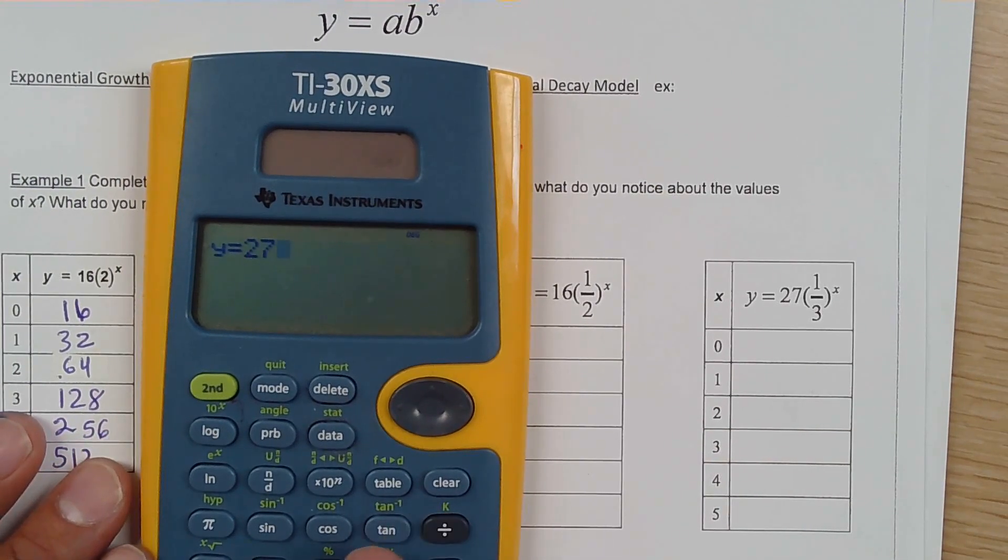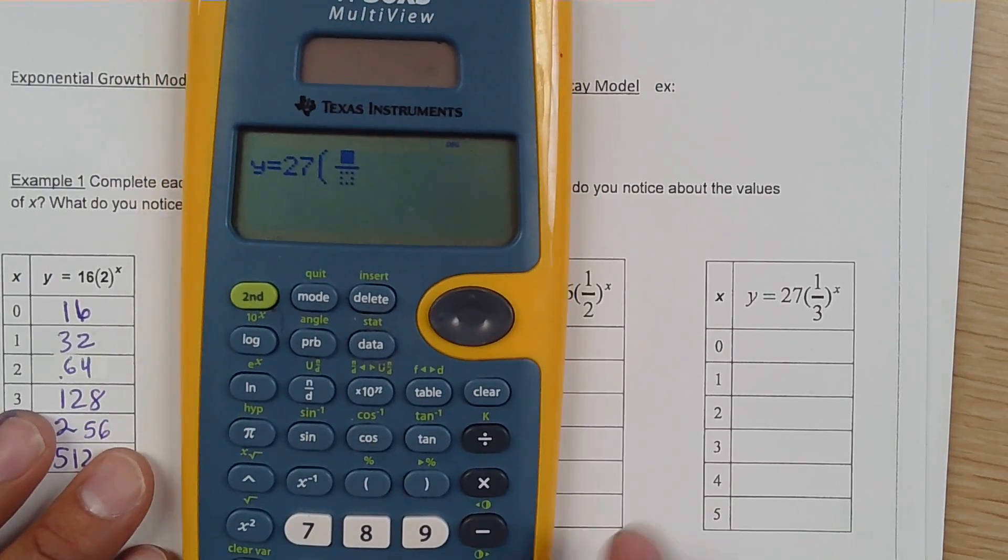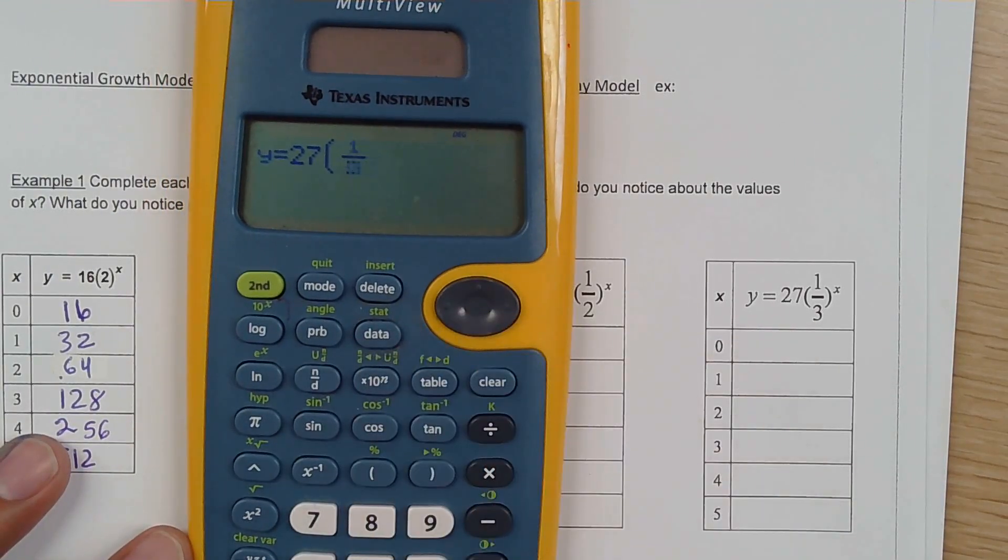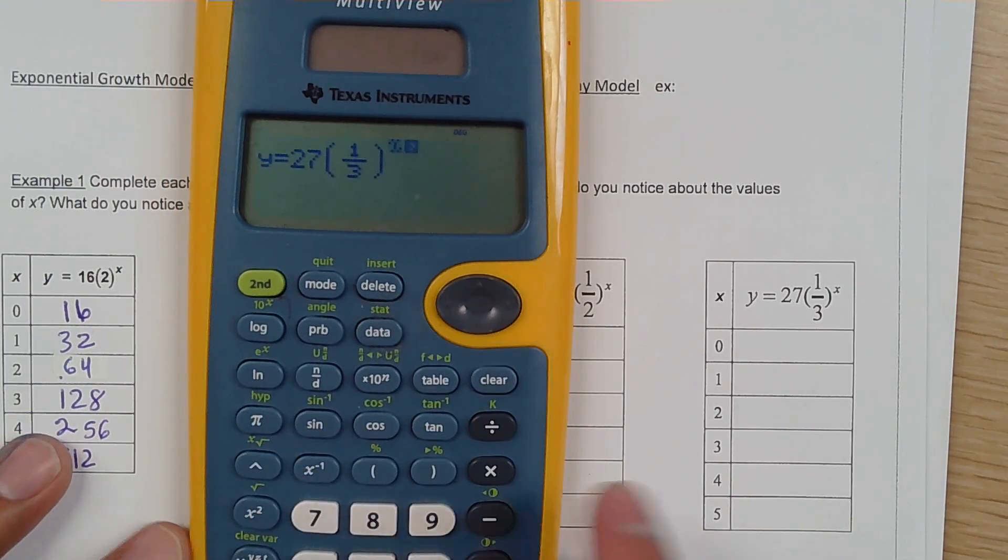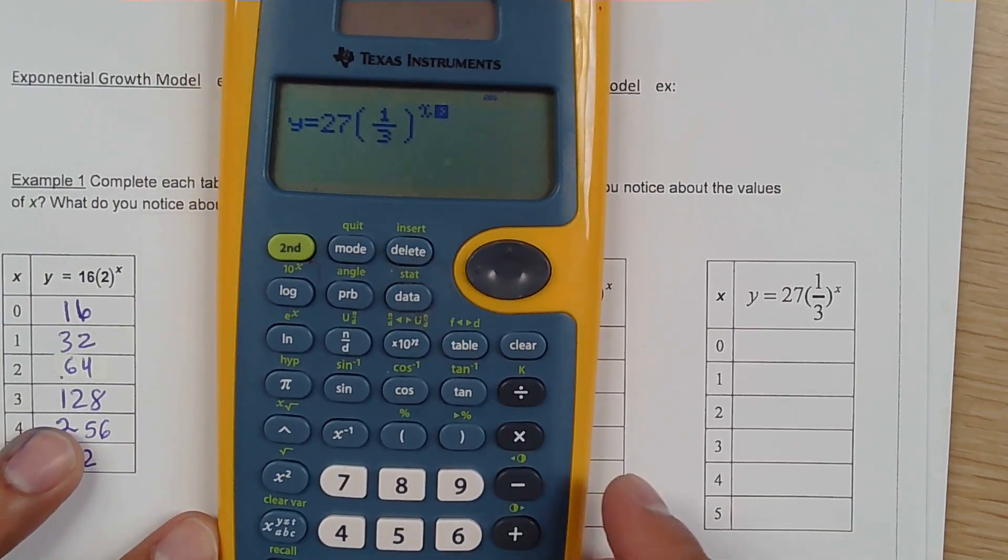So that will be 27 parentheses. N over D button. And then we're going to put 1 over 3. Close parentheses. Raised to the power of x. Okay. Now I press enter.